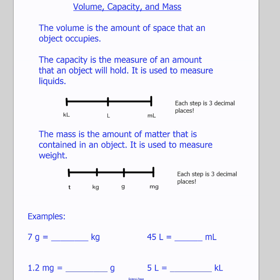The conversions for capacity and mass are very similar to our metric conversions. For volume measurements, each step is worth three decimal places. It works the same way: if you move to the left on the chart, your decimal moves to the left; if you move to the right, your decimal moves to the right. You can come up with a saying to remember the order — if that helps you remember which unit comes first, second, and third.